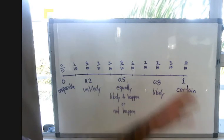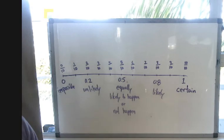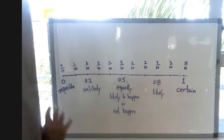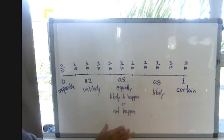I would like you to please put this little number line into your notes and it's going to help you out with probabilities. Now in between zero and one in the middle, equally likely to happen or not happen.